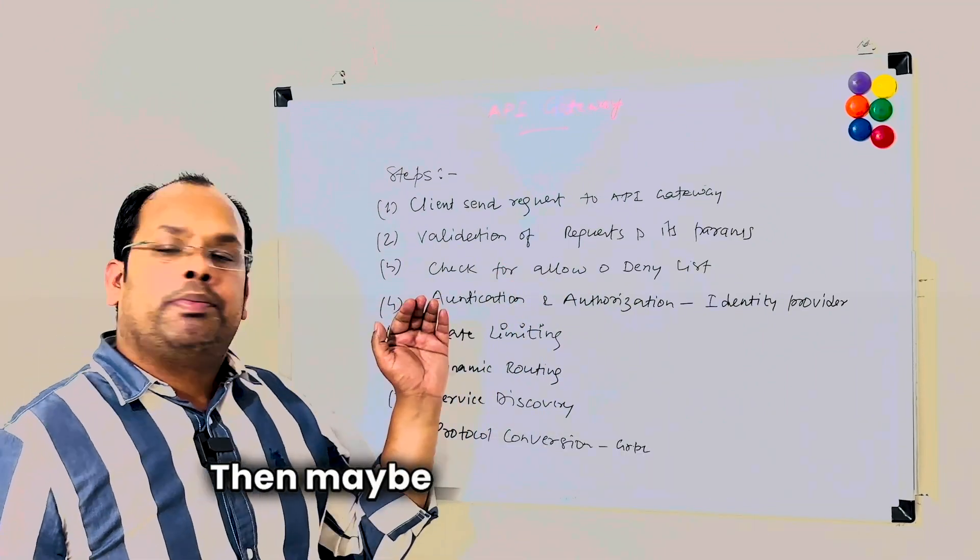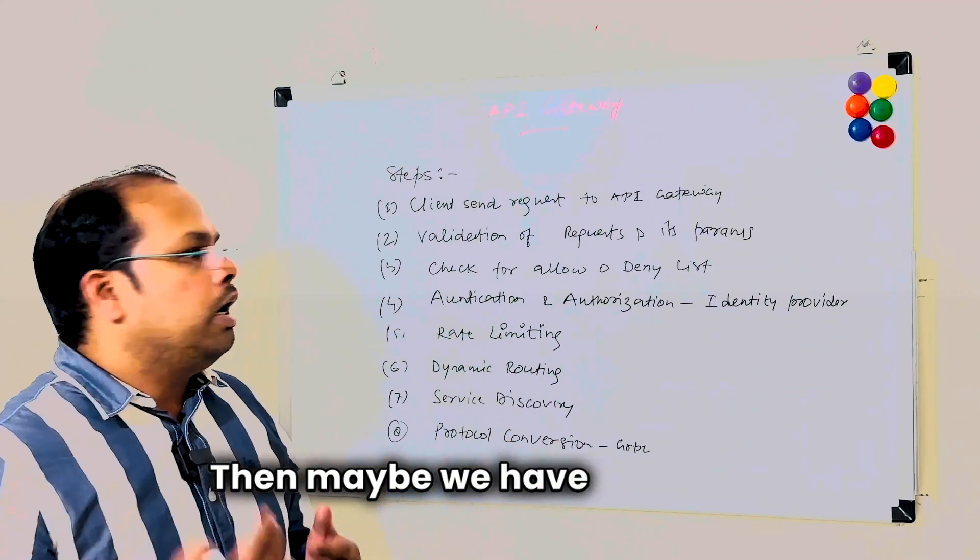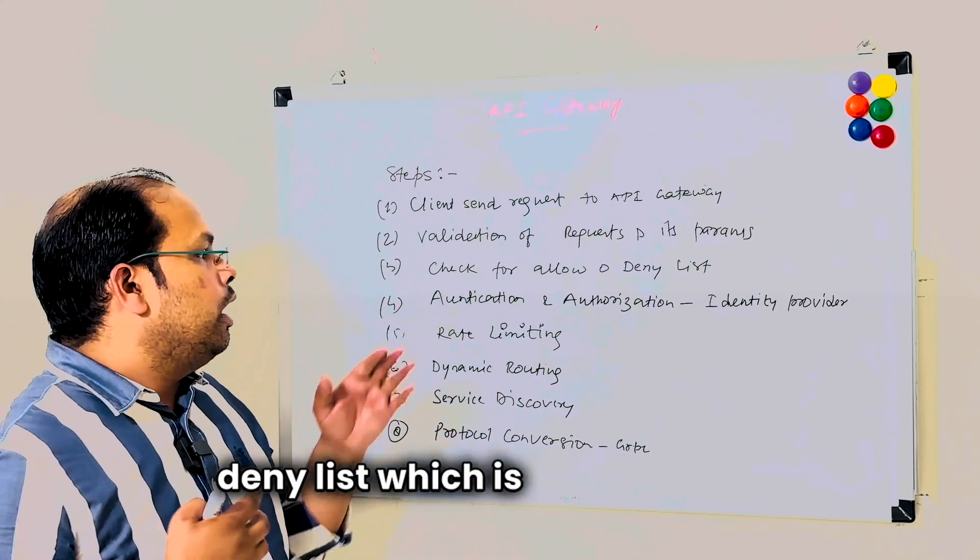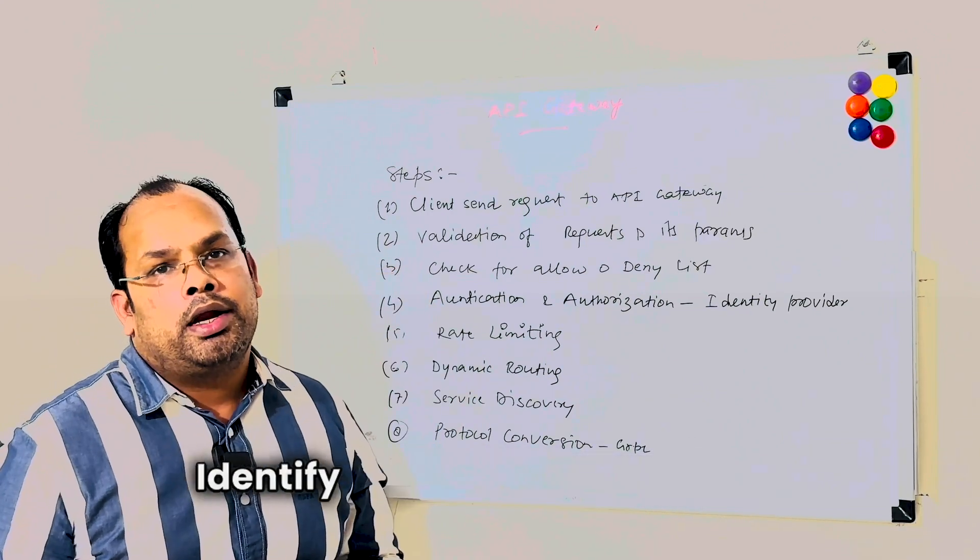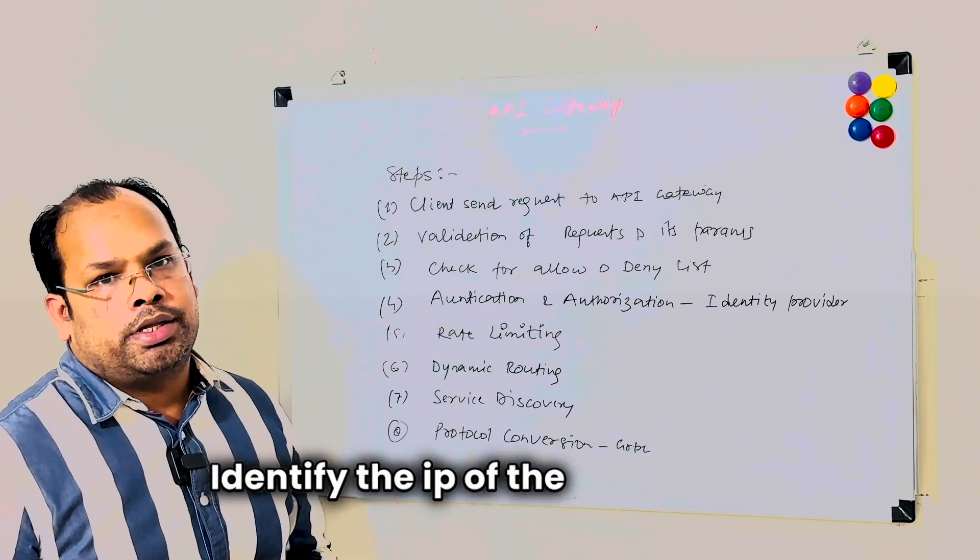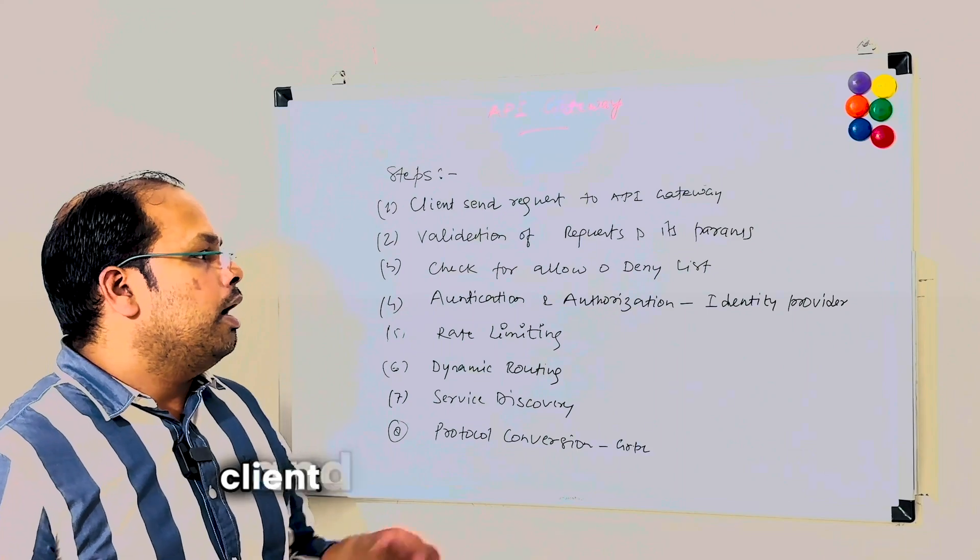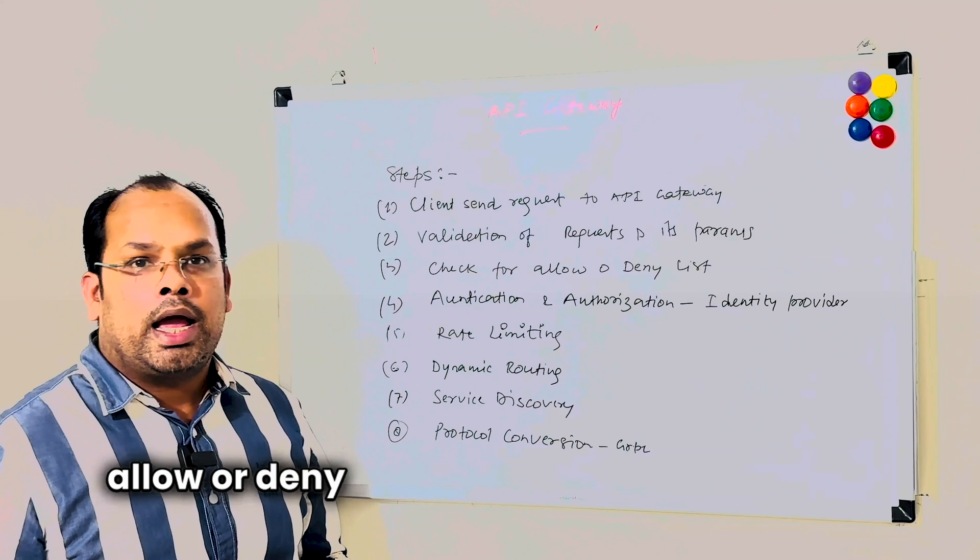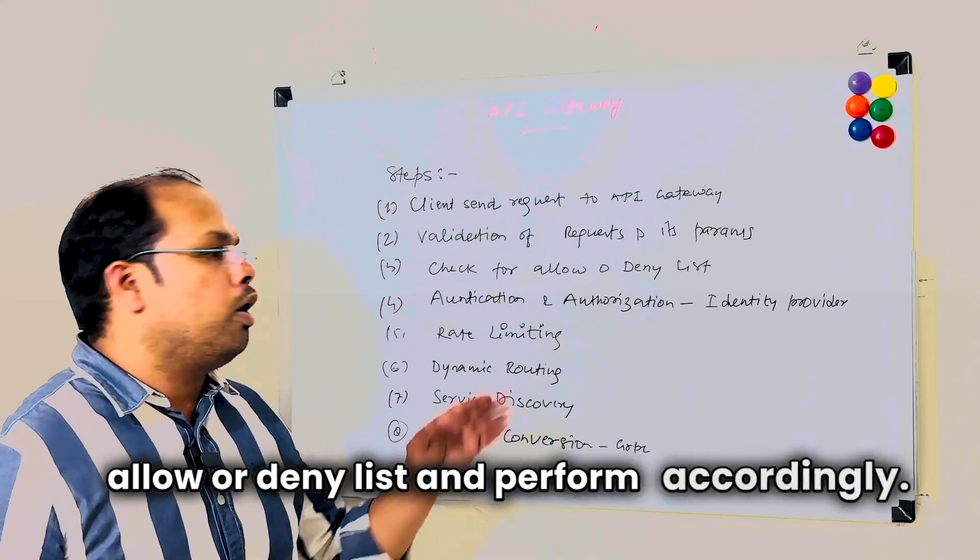Then maybe we have allow and deny list, which is API Gateway identifies the IP of the sender of the client and checks if it exists in allow or deny list and performs accordingly.